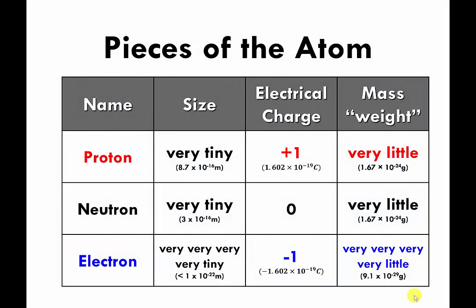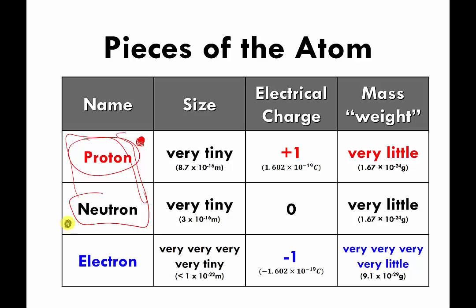The previous video dealt with protons, which I was drawing as a red circle. This video is going to deal with neutrons and protons. Neutrons are going to be drawn with a grayish-blackish circle, like that. So get used to both of those things — they're going to show up a lot in this video.